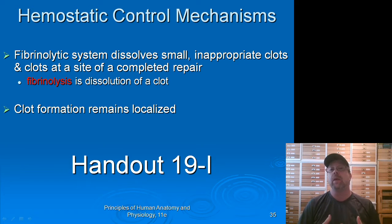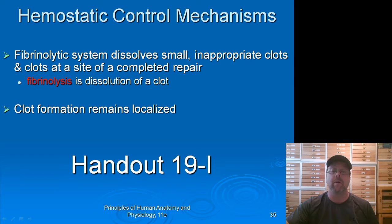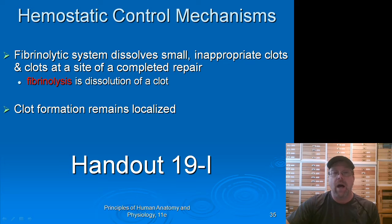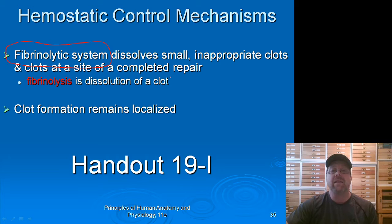We form fibrin, which is that insoluble protein that forms the blood clot itself. This was done by a cascade of blood clotting factors. So after we have repaired the damage, this blood clot needs to go away. We don't want to keep any blood clots. So we're going to get rid of the blood clot through a process called fibrinolysis.